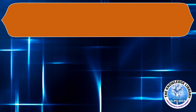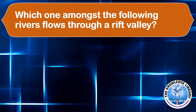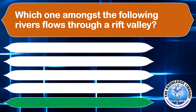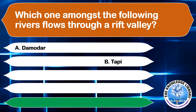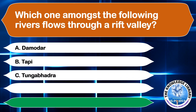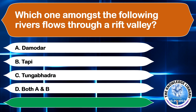Which one amongst the following rivers flows through a rift valley? A. Damodar, B. Tapi, C. Tungabhadra, or D. Both A and B. The correct answer is option B, Tapi.